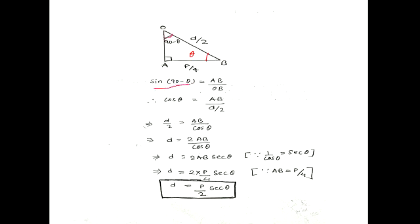Then sine of 90 minus theta will be equal to AB divided by OB. And we know that sine of 90 minus theta is equal to cos theta.